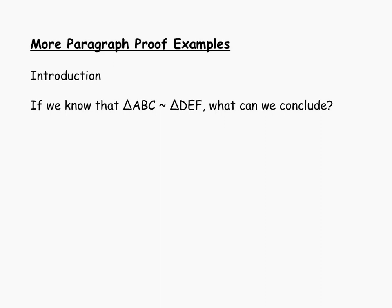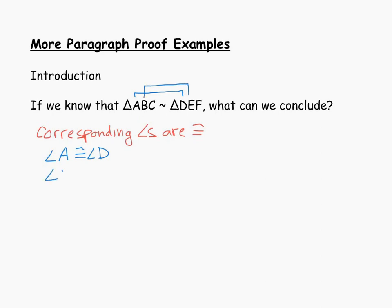Let's start by reviewing what we would know if we could establish that two triangles were similar. Suppose we knew that triangle ABC was similar to triangle DEF. We would know that the corresponding angles are congruent — that's one property that similar triangles have. So based on this similarity statement, angle A would be congruent to angle D, angle B would be congruent to angle E, and angle C would be congruent to angle F.